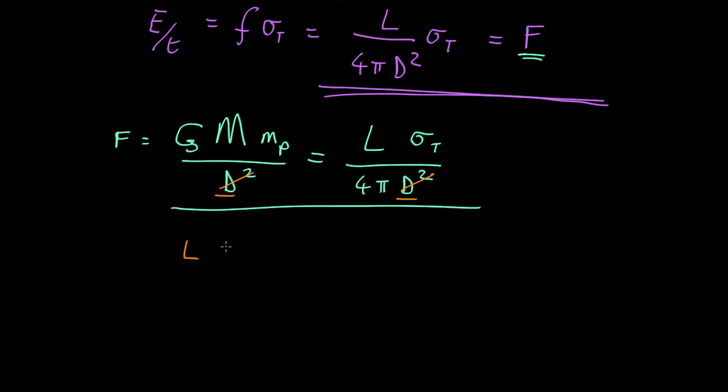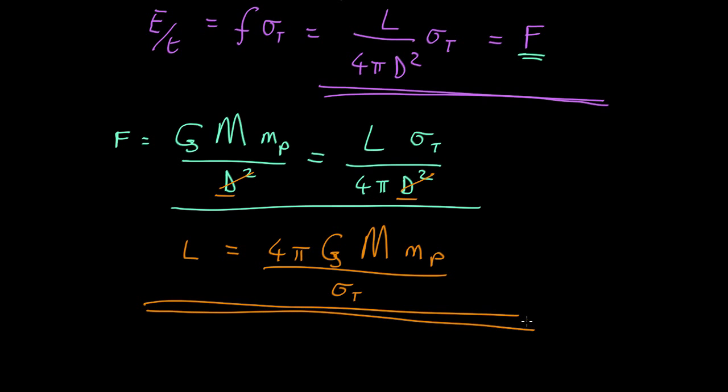Okay. So we have luminosity equals... So let's put that on the left. That's going to be 4 pi g mass of the white dwarf mass of the proton all over the Thompson cross-section. This is assuming it's just hydrogen gas, so the mass is just the mass of one proton. If it was something heavier, then they'd have to have a correction factor for the ratio of electrons to protons and the whole thing. But for the outer layers of the white dwarf, it is probably mostly hydrogen.